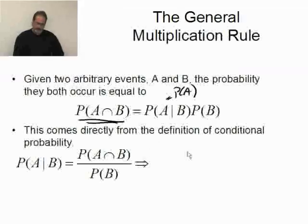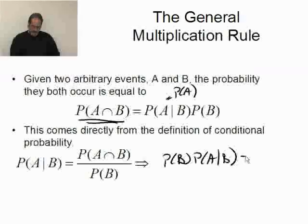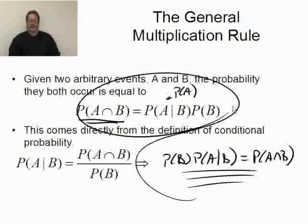Now, this comes directly from the definition of conditional probability. Probability of A given B is given to us as the probability of A and B divided by the probability of B. Well, if I multiply both sides by the probability of B, it'll cancel here, and I will get the probability of B times the probability of A given B equals the probability of A and B. And this is, in fact, the same thing as I'm saying up here.